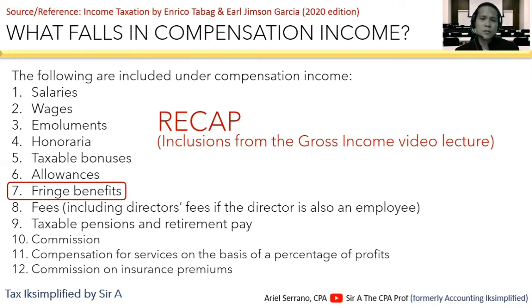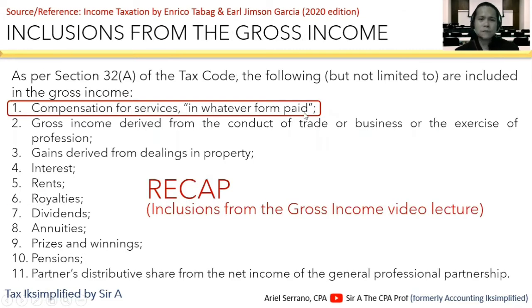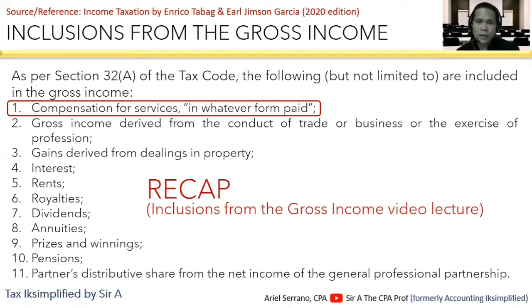Fringe benefits are on top of, in addition to, the basic salaries received by individual employees. Now, compensation income is part of the inclusions from gross income. So first, we think of it as included as part of gross income — but not all of it. That is why we have a separate topic and video lecture on fringe benefits, to identify which are included in gross income and which are tax exempt.